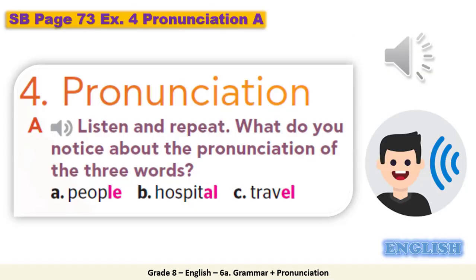Now let's go back to Student Book page 73, the pronunciation exercise. Listen and repeat. What do you notice about the pronunciation of the three words? The words 'people,' and 'hospital' — what did you notice? The endings in these three words have the same pronunciation but different spelling.